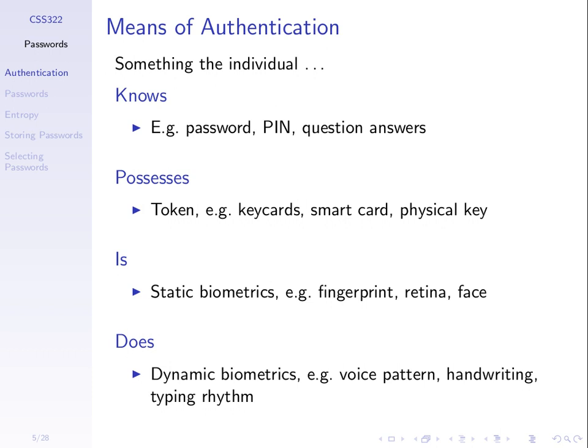Something that you do also refers to biometrics, but dynamic biometrics — things that change. Your voice pattern, for example: a computer system can recognize people based on their voice patterns. Your handwriting or typing rhythm are also examples. If these things can uniquely identify you among a set of users, they can be used as a form of verification.